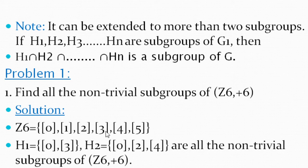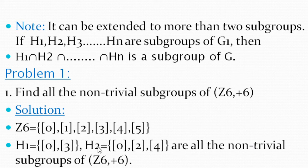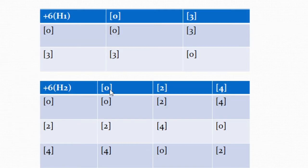Z₆ contains 6 elements: {0, 1, 2, 3, 4, 5}. We take H₁ = {0, 3} and H₂ = {0, 2, 4} as two non-trivial subgroups of Z₆. We check whether these are subgroups using the Cayley table under addition modulo 6. For H₁ = {0, 3}: the table gives 0+0=0, 0+3=3, 3+0=3, 3+3=6≡0 (mod 6). All results are in H₁.